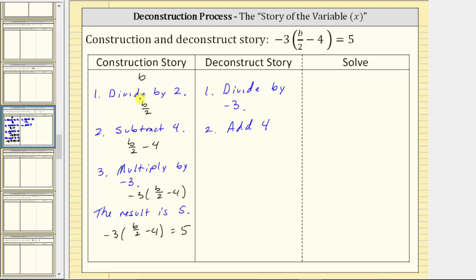And now we need to undo the first step in the construction story to get the last step or third step in the deconstruct story. To undo division by two, we multiply by two. Again, multiplying by two will undo or perform the opposite operation of dividing by two. So these three steps will be the steps we perform on both sides of the given equation to get back to B or to solve the equation for B.